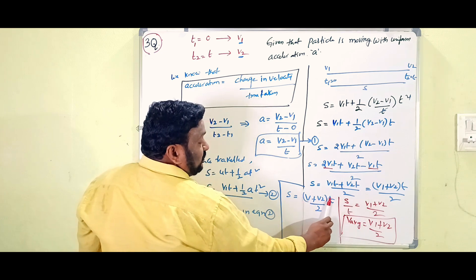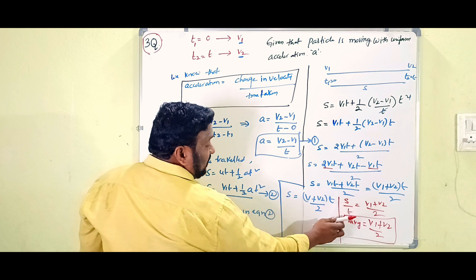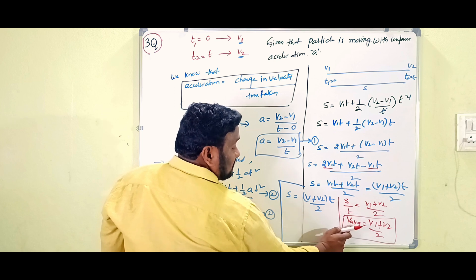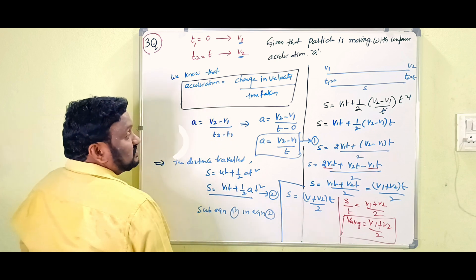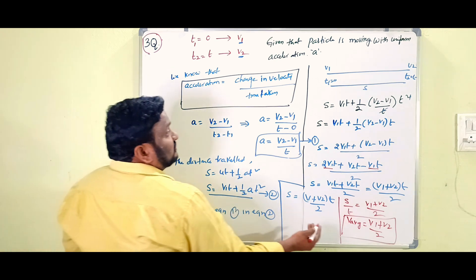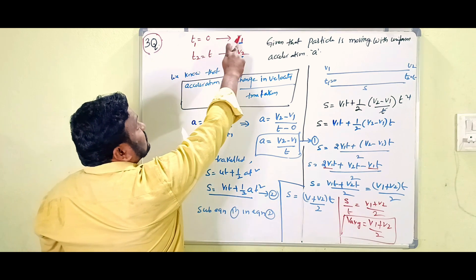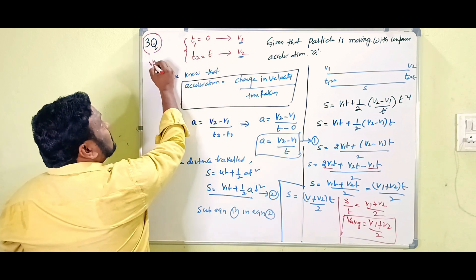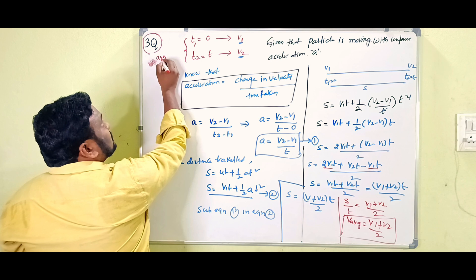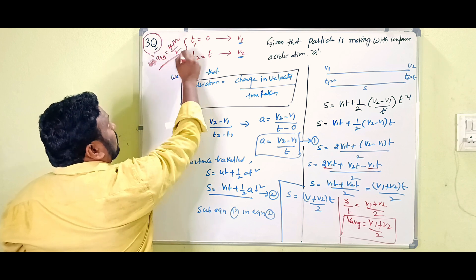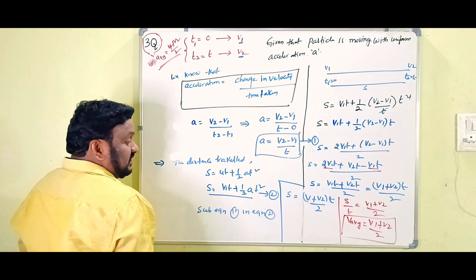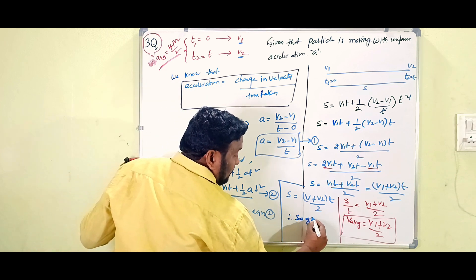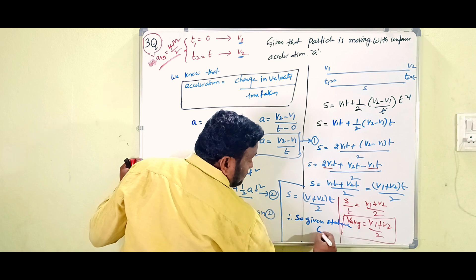So we have shown that s/T = (v1 + v2)/2, which means average velocity = (v1 + v2)/2. Therefore the given statement is correct. At t1 equals zero with velocity v1, and t2 equals T with velocity v2, the average velocity in this interval is indeed (v1 + v2)/2. The given statement is correct.